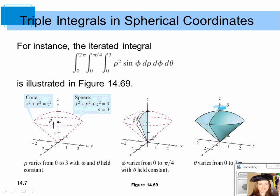For instance, a triple integral using spherical coordinates: the iterated integral from 0 to 2π of the integral from 0 to π/4 of the integral from 0 to 3 of rho squared sine phi d rho d phi d theta gives you the volume of the solid region. The distance rho goes from 0 to 3, the angle phi goes from 0 — the positive z-axis — out to π/4, and theta goes from 0 all the way around to 2π. Those three bounds determine this solid region.